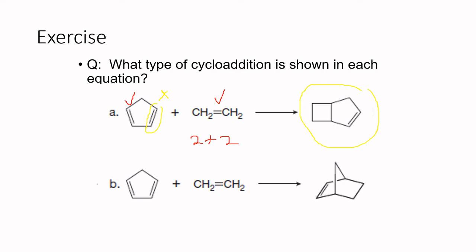For the second molecule, the product shows a bridge in the middle. We can count 3 pi bonds across both reactants, and all pi electrons are involved in the reaction to form that bridge. Since both reactants are fully involved and all electrons participate, this reaction is a 4+2 cycloaddition.